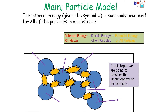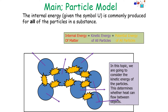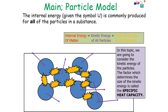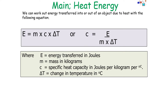In this topic, we're only going to consider the kinetic energy of the particles — the factor that determines the temperature of a substance and whether heat can flow between objects. The factor which determines the size of the kinetic energy store in a substance is called the specific heat capacity. We can work out the energy transferred into or out of an object due to the change in the kinetic energy store with the equation E = m × c × ΔT, where E is the energy transferred in joules, m is the mass of the substance in kilograms, and c is the specific heat capacity in joules per kilogram degree Celsius.